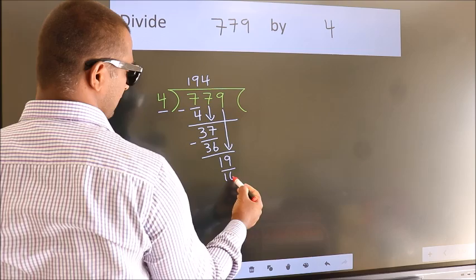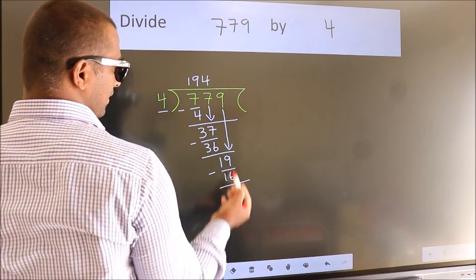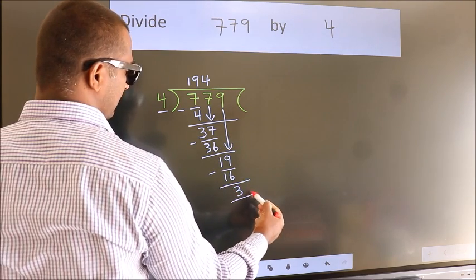Now we subtract. We get 3. No more numbers to bring it down, so we stop here. This is our remainder.